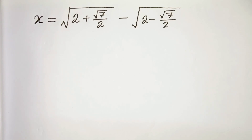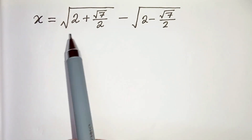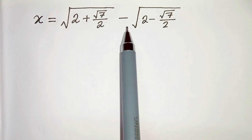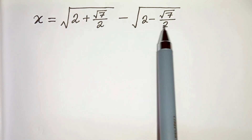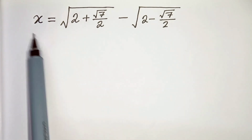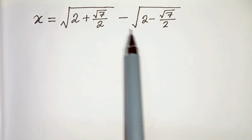Hello everyone. In this video we have x equals root of (2 plus root 7) over 2 minus root of (2 minus root 7) over 2. We have to find the value of x, that means we have to evaluate this.